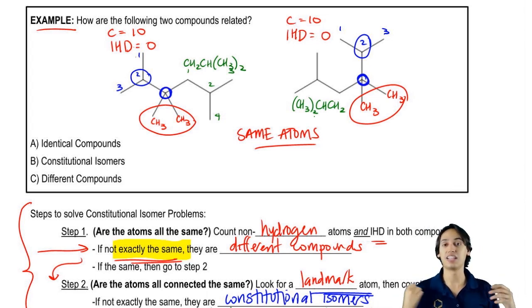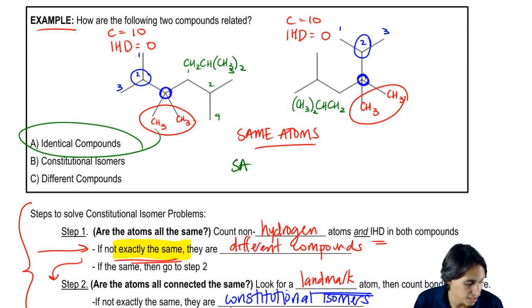I just want you to know, hey, they have the same groups on all sides. So these would be identical compounds because they have the same atoms and they have what we call the same connectivity. Okay.